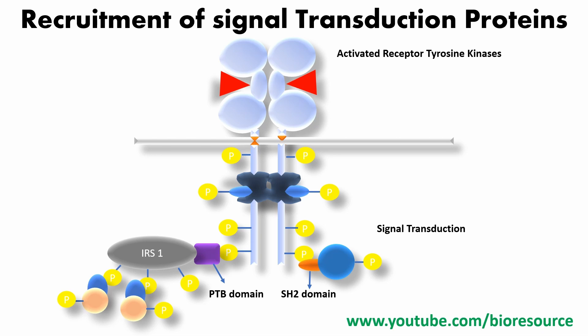The activation and subsequent autophosphorylation of the RTKs result in the recruitment of a wide range of downstream signaling proteins. Most autophosphorylation sites function as binding sites for SH2 or PTB domain-containing signal proteins. The SH2 domain-containing proteins can be recruited directly to the receptor or indirectly through docking proteins that bind to the RTKs via their PTB domains. The involvement of various docking proteins gives the activated RTKs the ability to recruit and regulate a wide range of signaling pathways.